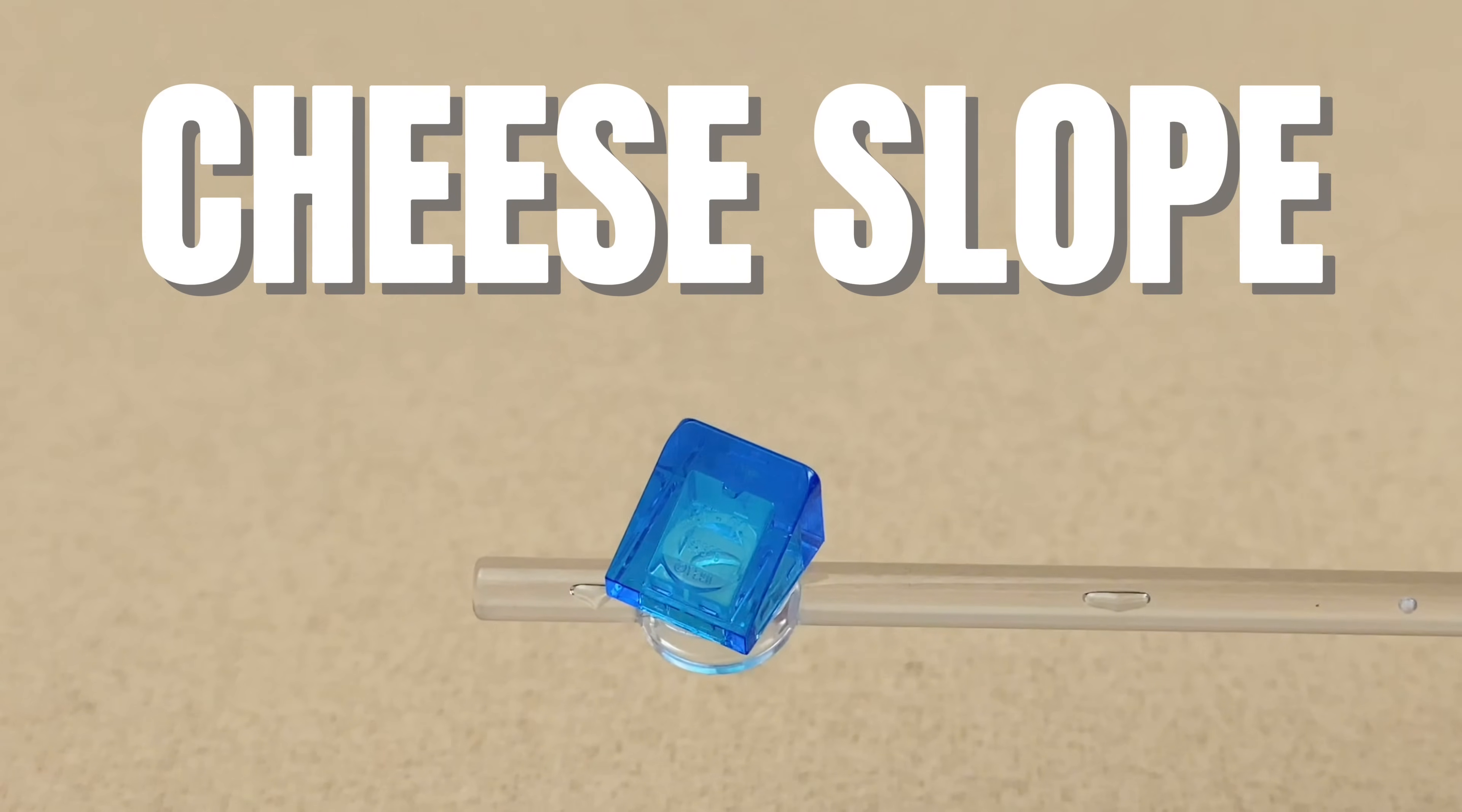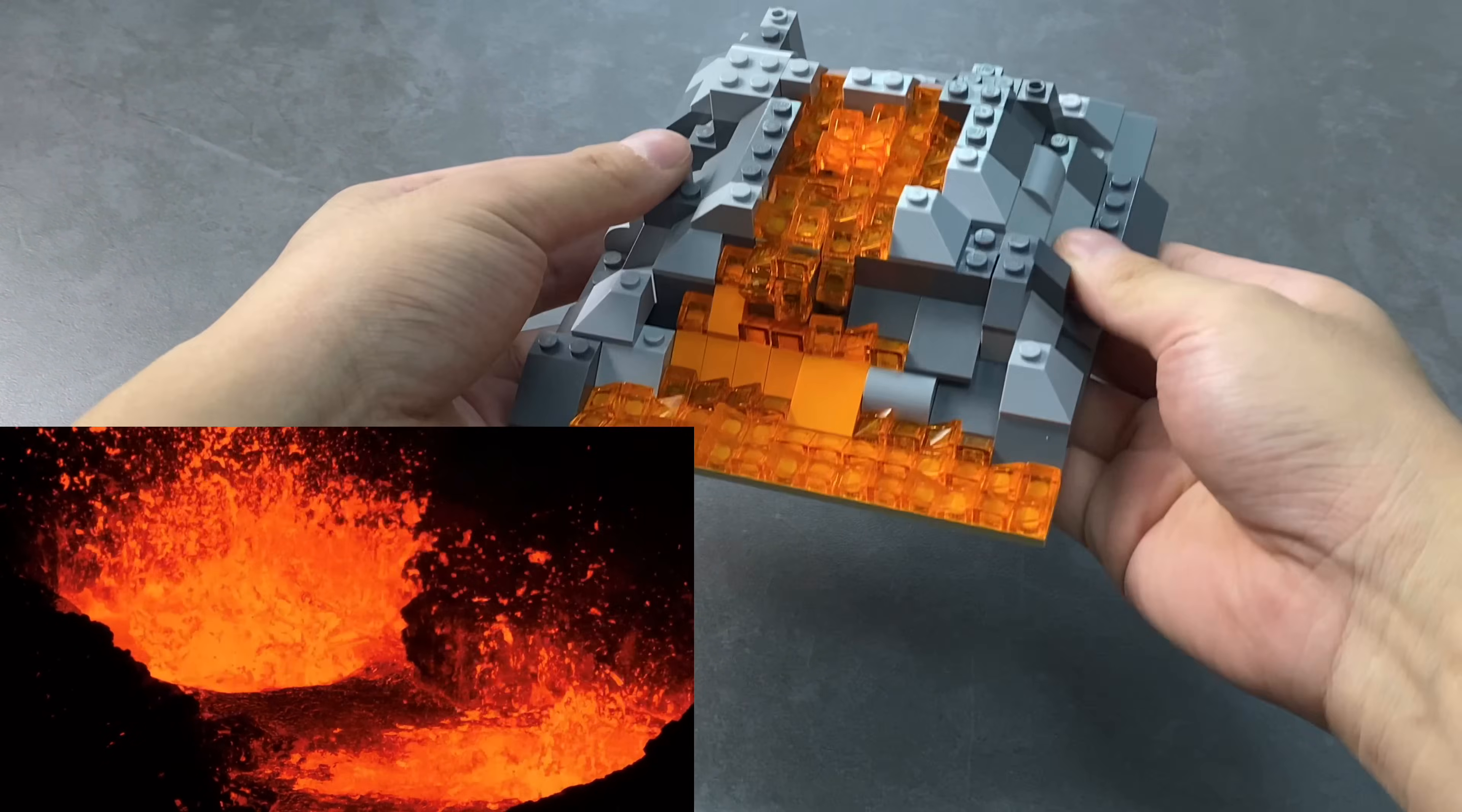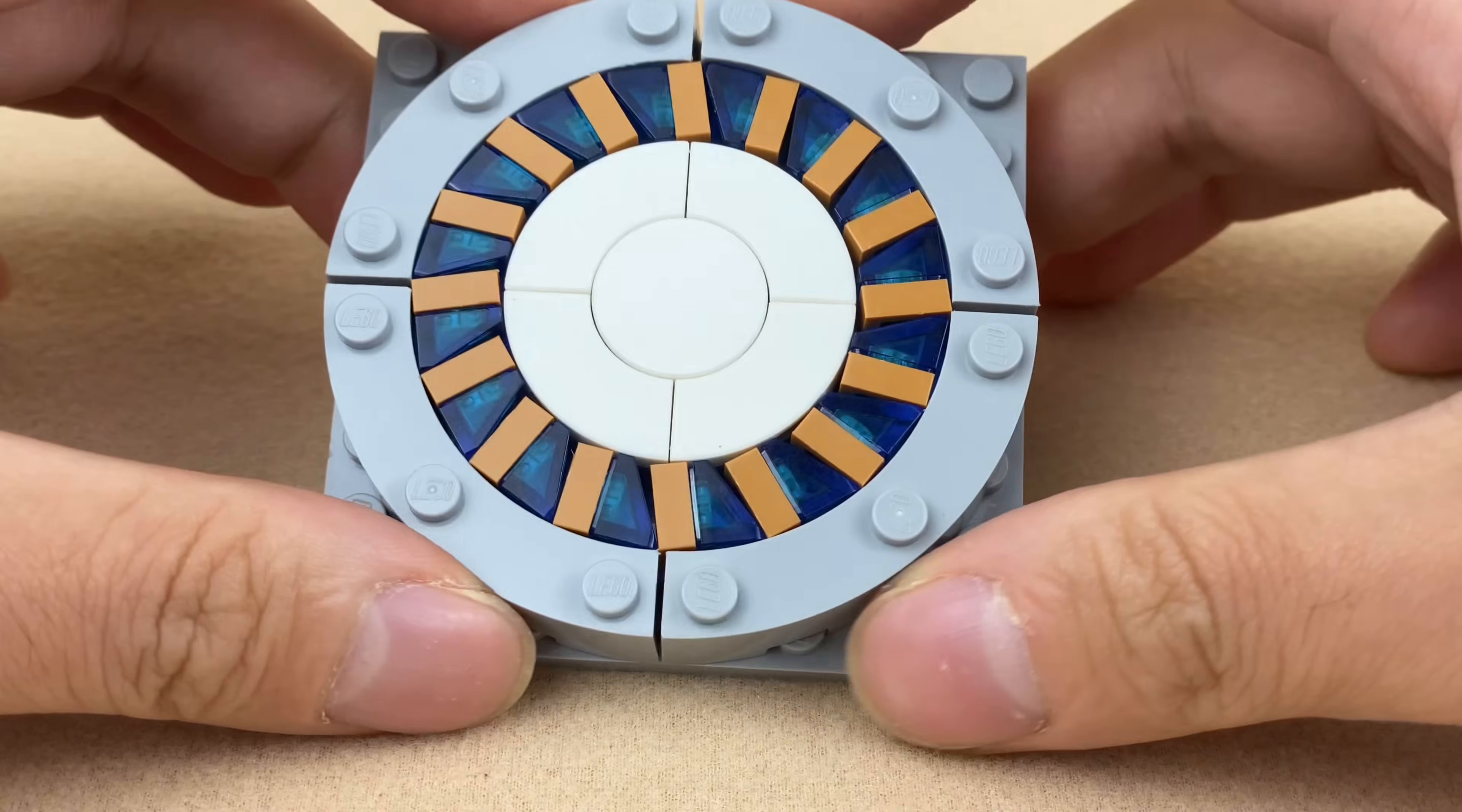This is a cheese slope. In my previous video, I used cheese slopes to construct the scene of an undersea volcano erupting, and they're better than flat tiles to simulate the effect of lava. Today, I'm excited to share 8 amazing ways to utilize this versatile piece. So let's go!